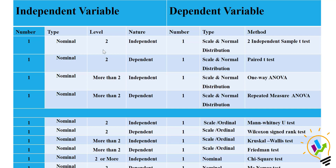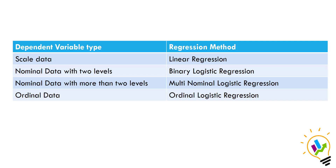If both variables are nominal and the levels are dependent, then you use the McNemar test. So based on the properties of the data — whether it is categorical, nominal, or ordinal, and whether it is normally distributed or not — the methods will change. For regression, if the dependent variable is scale data, you use linear regression.